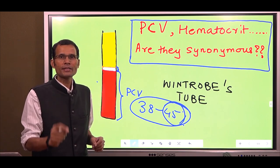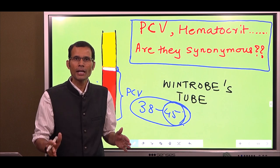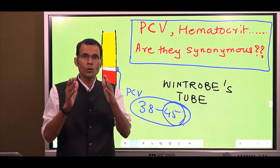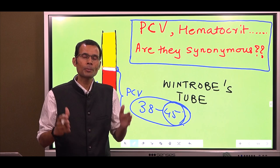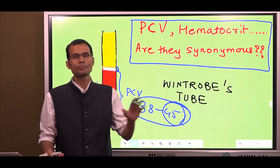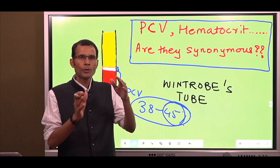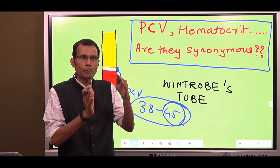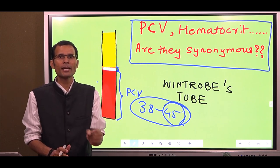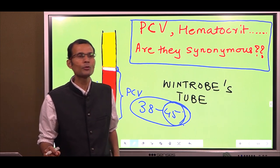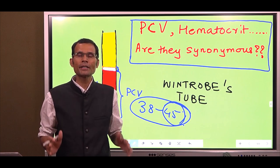PCV means packed cell volume. Consider a unit quantity of blood - it could be 1 ml, 10 ml, or 100 ml - we are looking at whole blood. We will separate the cells and plasma, then measure their relative percentages. When you measure the volume of all the packed cells separated from the plasma, that volume is called the packed cell volume. PCV is the volume of packed cells separated from plasma in a unit quantity of whole blood.